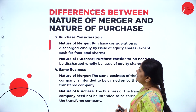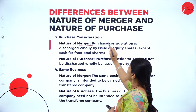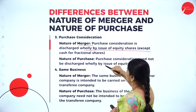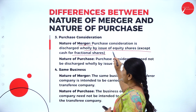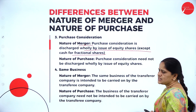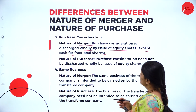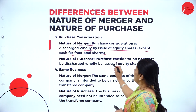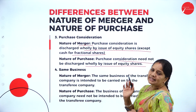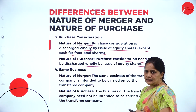The third difference is relating to purchase consideration. In the nature of merger, purchase consideration is discharged wholly by the issue of equity shares, except cash for fractional shares. In the nature of purchase, it need not be by the issue of equity shares only — they can either pay cash or anything else.